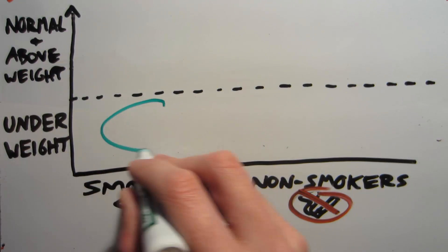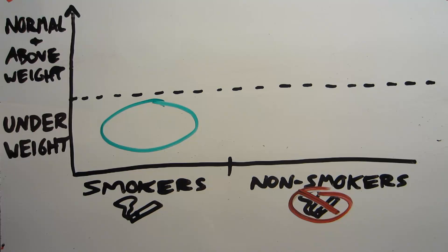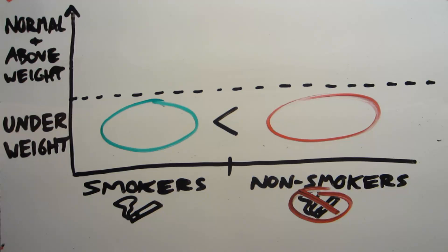Fact number one is that underweight smokers babies have a significantly lower mortality rate than the underweight babies of non-smokers. This is surprising, but it's a fact.